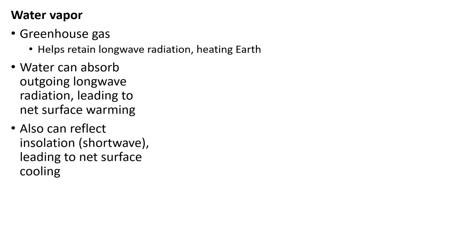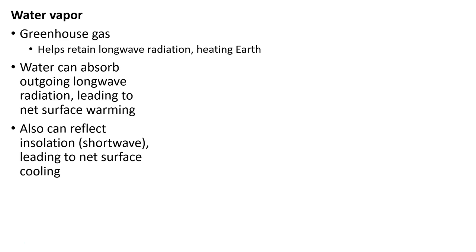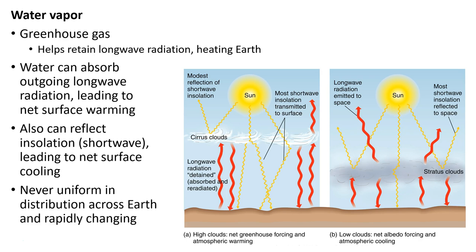They can also reflect—water vapor or clouds, specifically that make them up, can also reflect that insolation or incoming short wave radiation back out into space, which would lead to net surface cooling. So we have this complicated situation where they can help warm the surface of the earth, but they can also in ways help cool it, as shown by this figure here.